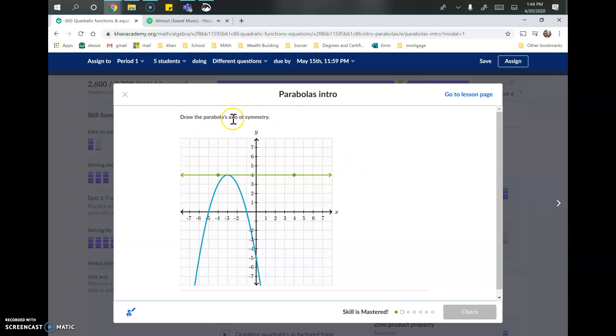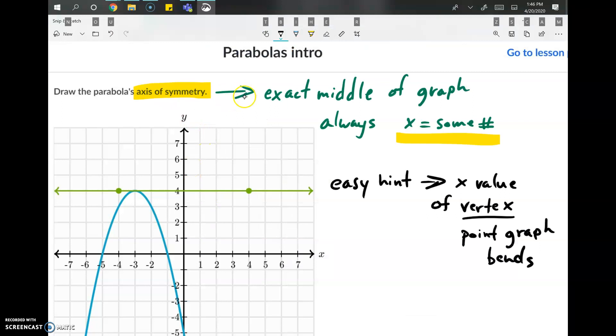This question asks us to draw the parabola's axis of symmetry. The axis of symmetry is the exact middle of the graph, and it's always x equals some number. An easy hint is finding the x value of the vertex. The vertex is just where the graph bends. When you look at this graph, it bends right here. The x value of that vertex is negative 3, so the equation for the line of symmetry is x equals negative 3, because that is the exact middle of the parabola.